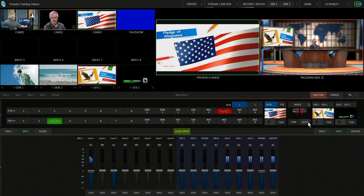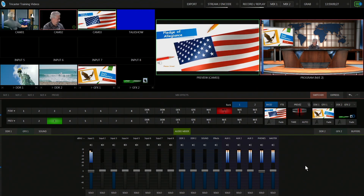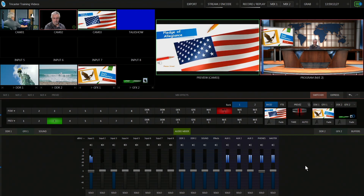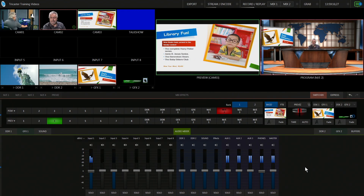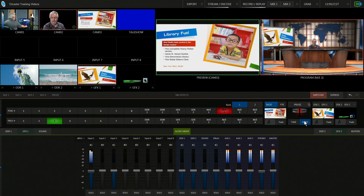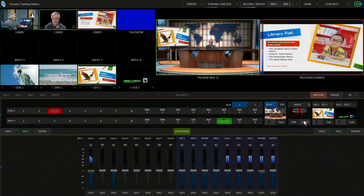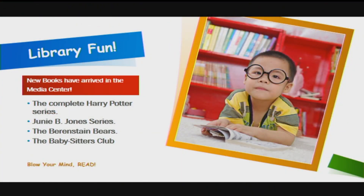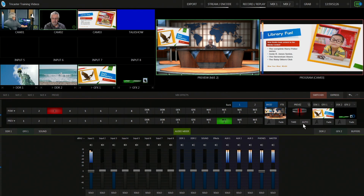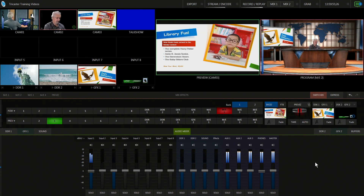When the pledge is over, switch back to the set. The anchors do more announcements, and the PowerPoint operator switches to the next slide. We get ready for the anchors to read the next announcement — a library fund slide. Switch to the next slide and while students are reading it, they see the full graphic.